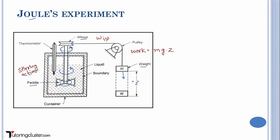Due to the stirring action, as you are stirring that liquid, there will be an increase in temperature of the liquid. There will be flow and agitation of the liquid. This increase in temperature can be captured — you can measure how much the temperature has increased with the help of a thermometer, which is why there are thermometers in the setup.